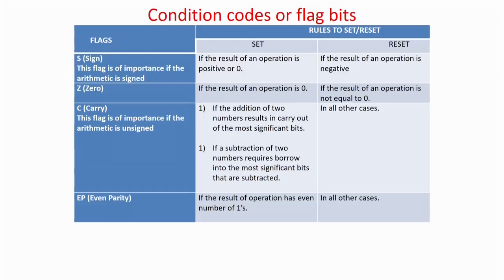Now we will look at what are the different types of flags in a typical CPU. First is the sign flag. This flag is of importance if the arithmetic is signed — i.e., if using two's complement arithmetic. If the MSB is 0 it is a positive number; if the MSB is 1 it is a negative number. If the answer is zero (MSB = 0), the flag is set indicating a positive number; if the answer is not equal to zero (MSB = 1), it is reset.